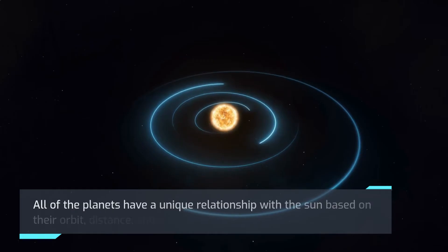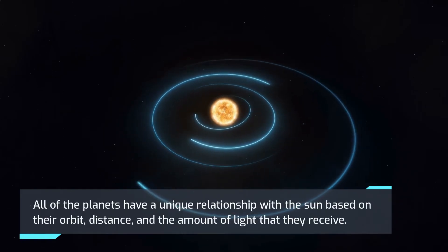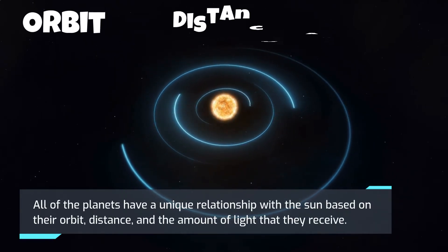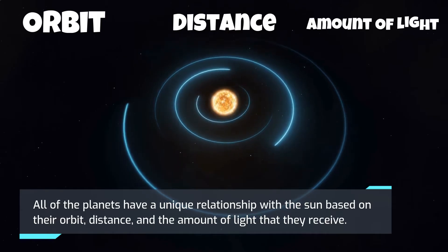All of the planets have a unique relationship with the Sun based on their orbit, distance, and the amount of light that they receive.